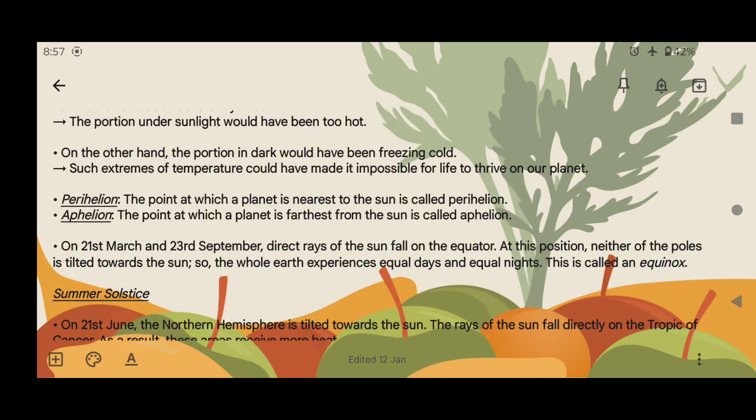Perihelion: The point at which a planet is nearest to the sun is called perihelion. Aphelion: The point at which a planet is farthest from the sun is called aphelion.